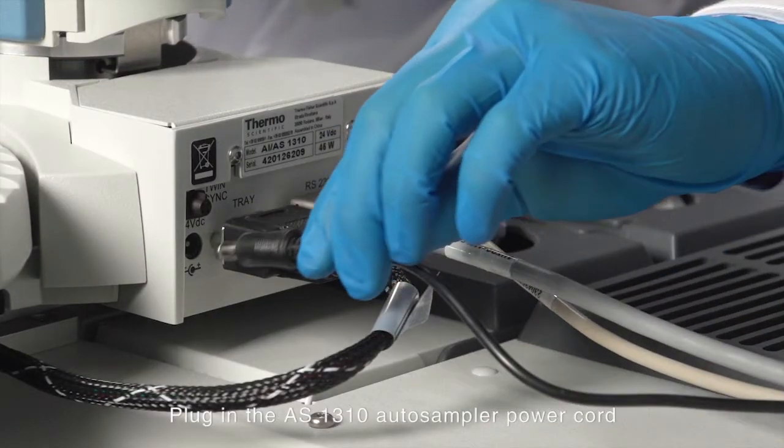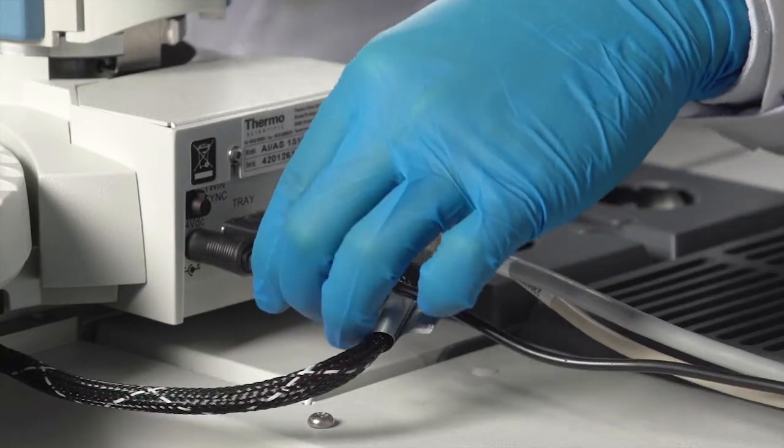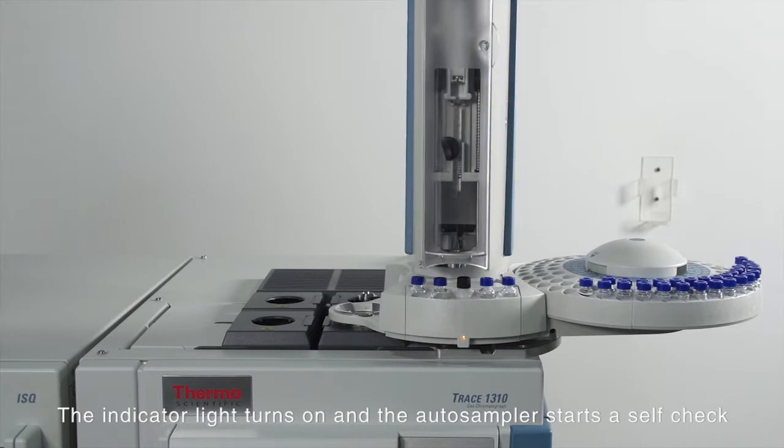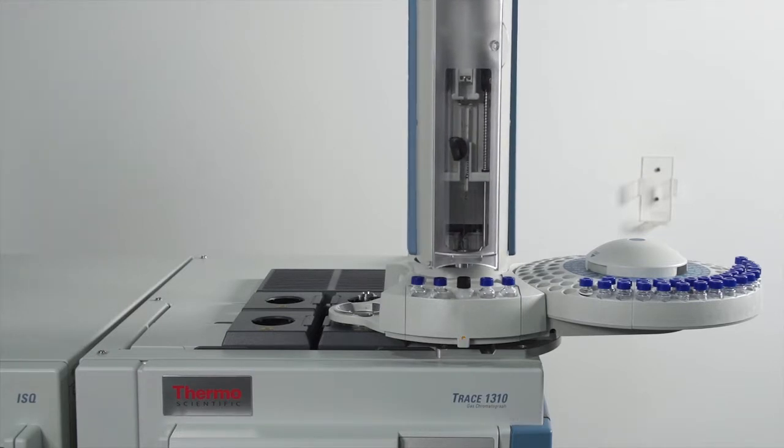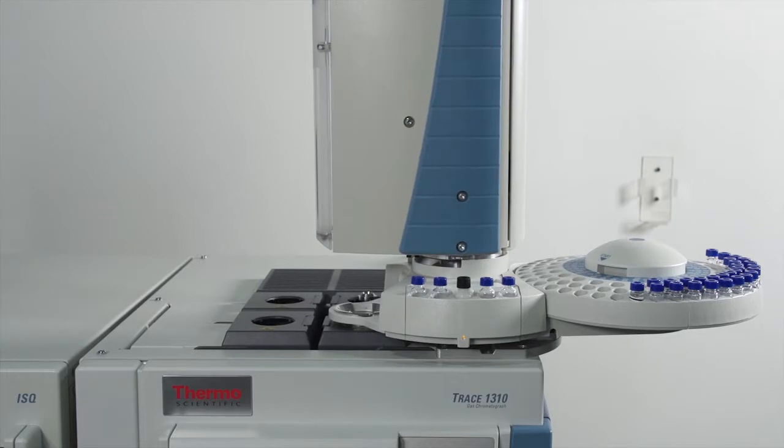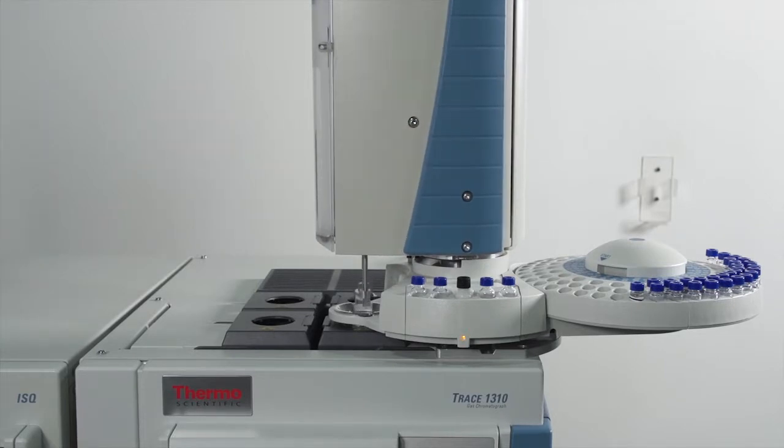...AS 1310 autosampler power cord. The indicator light turns on and the autosampler starts a self-check. When it is done, it will return to the home position.